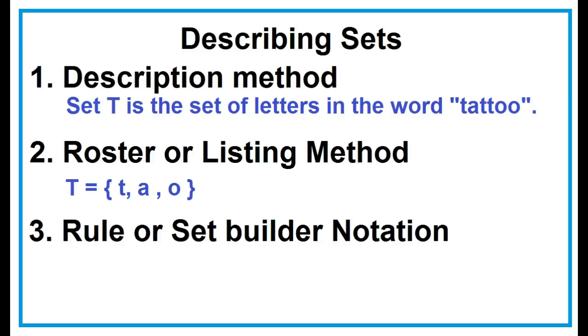Third is rule or set builder notation. Example: Set T is the set of all values of X, such that X is a letter in the word tattoo.